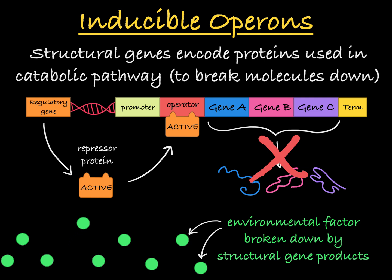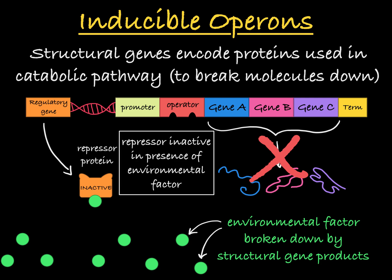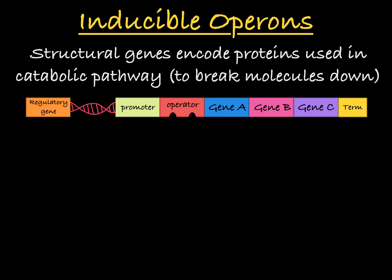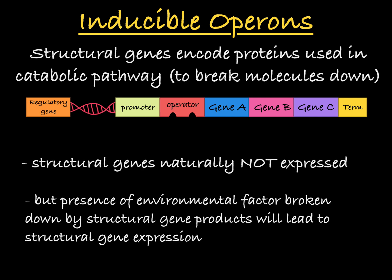This environmental factor will bind to the repressor, altering its shape and making it inactive. This means that the repressor can no longer block transcription, and the proteins from these genes can be created. Generally, these proteins will go on to help the cell break down and use the environmental factor. In this way, an inducible operon is naturally not expressed, but can be expressed in the presence of the environmental factor that needs to be broken down by the proteins associated with the genes in the operon.